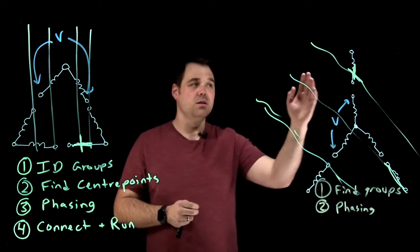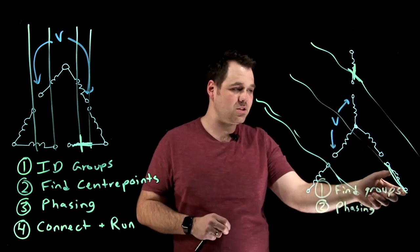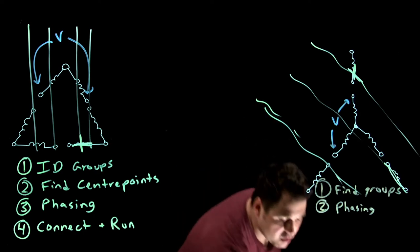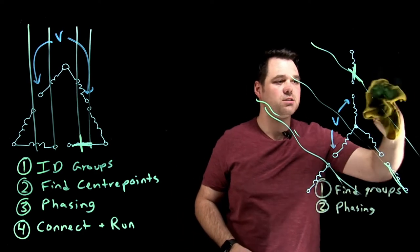So that's phasing. So we're confirming this set of two is in line with this one, this set of two is in line with this one, and this set of two is in line with this one.